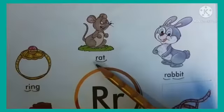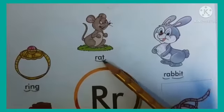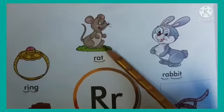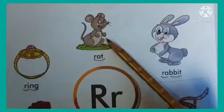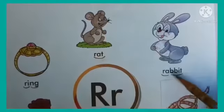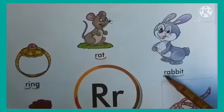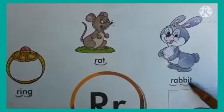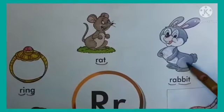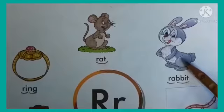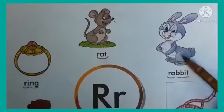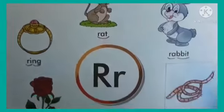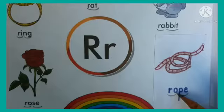Rat — R for rat. Rat means chuha. Rat is a small animal. Rabbit — R-A-B-B-I-T. Rabbit means khargosh. Rabbit is a pet animal. Yeh hamara paltu janwar hai.